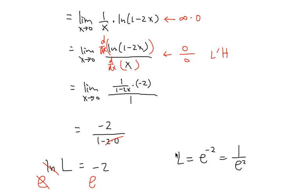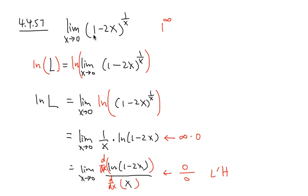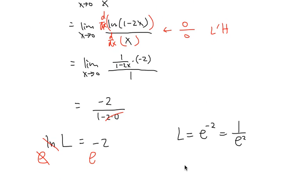L is exactly what we are trying to look for originally. So our original limit, the limit as x is approaching 0 of 1 minus 2x raised to the 1 over x, this limit is L, which is going to be 1 over e squared.